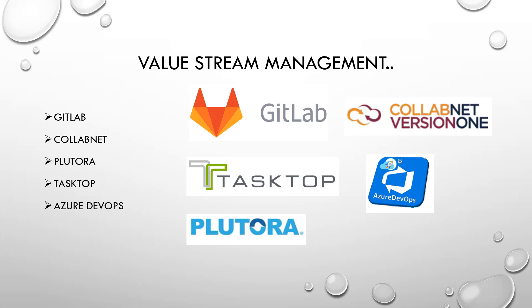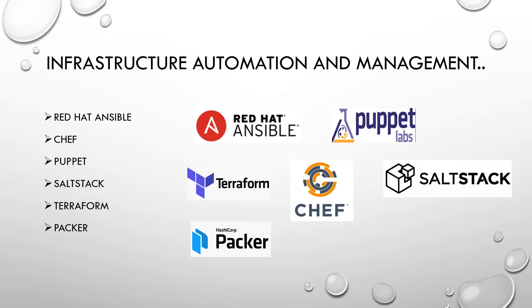GitLab has its own repository, CI/CD pipelines, tracking, and monitoring all built in. The next category has also been renamed: previously called Configuration Management, it is now called Infrastructure Automation and Management. As per the State of DevOps, the name was changed from configuration management to infrastructure automation because it gives more worth to the tool name.